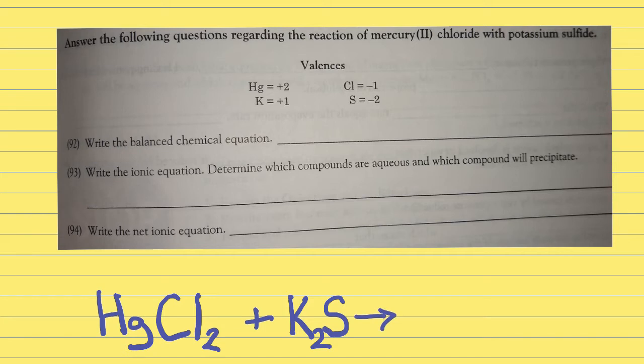Now what do they become when we react them together? This is a double replacement, so I'm going to put potassium first and chlorine. Each potassium is 1, each chlorine is 1, so I just need 1 of each. The mercury Hg and S are both +2 and -2, so I need 1 of each. To balance the equation, Hg is balanced, S is balanced, but we need 2 potassium and 2 chlorine, so put a 2 in front. That gives us the balanced equation for question 92.